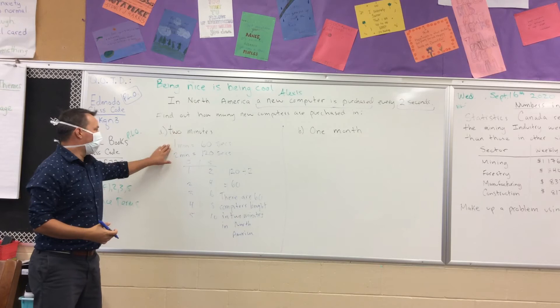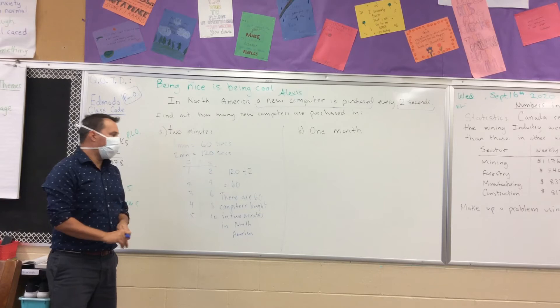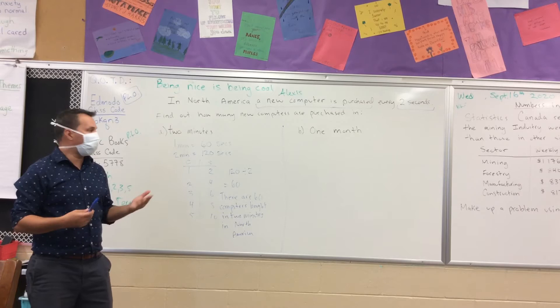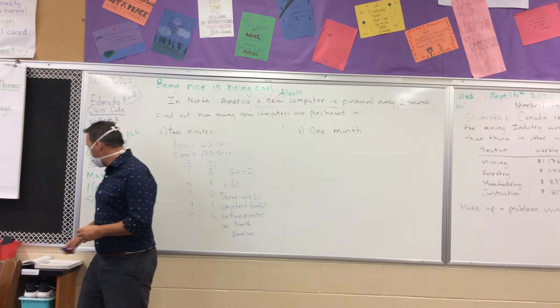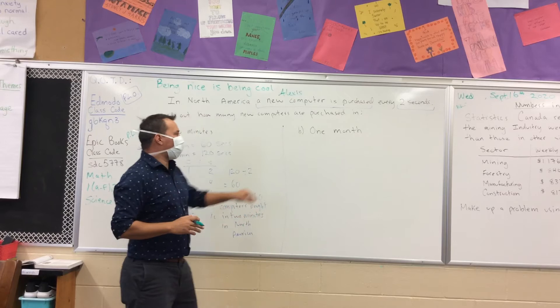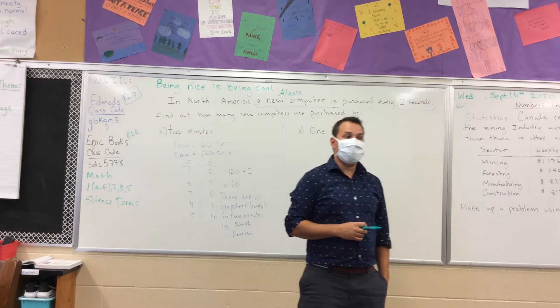We converted our two minutes into seconds, and we're able to figure out the number of computers. We know that if it's one computer for every two seconds, we can just divide by two — cut it in half. Now for the next question, we have to take one month and turn it into seconds.